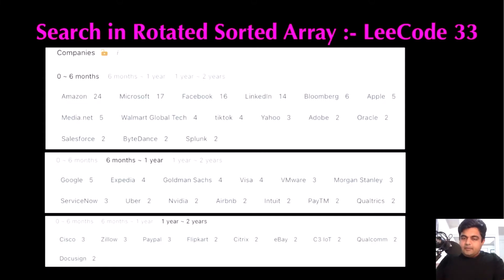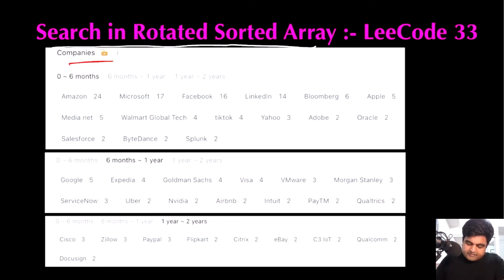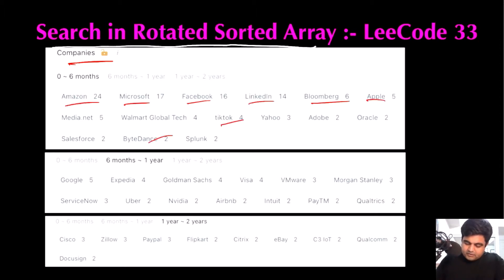Hello friends, we are still not employed by a FAANG company, so let's not stop LeetCoding till we get there. Today we are going to do 'Search in a Rotated Sorted Array.' Companies that have already asked this question include Amazon, Microsoft, Facebook, LinkedIn, Bloomberg, Apple, TikTok, ByteDance, Google, Goldman Sachs, Uber, and eBay — so I'm paying my utmost attention. I hope you also enjoy the video.